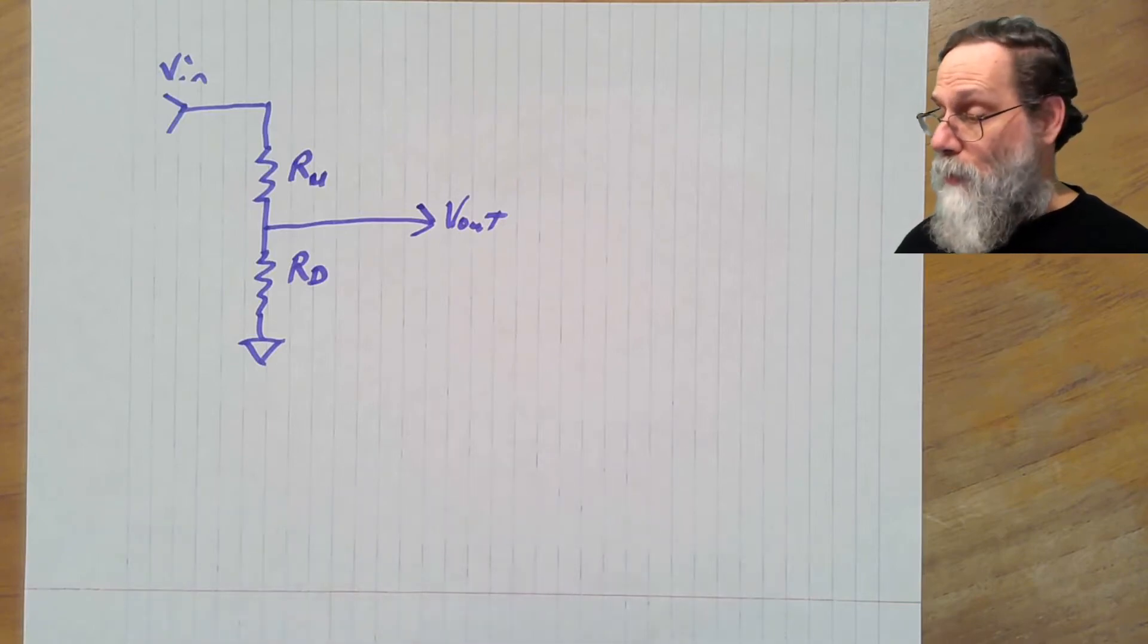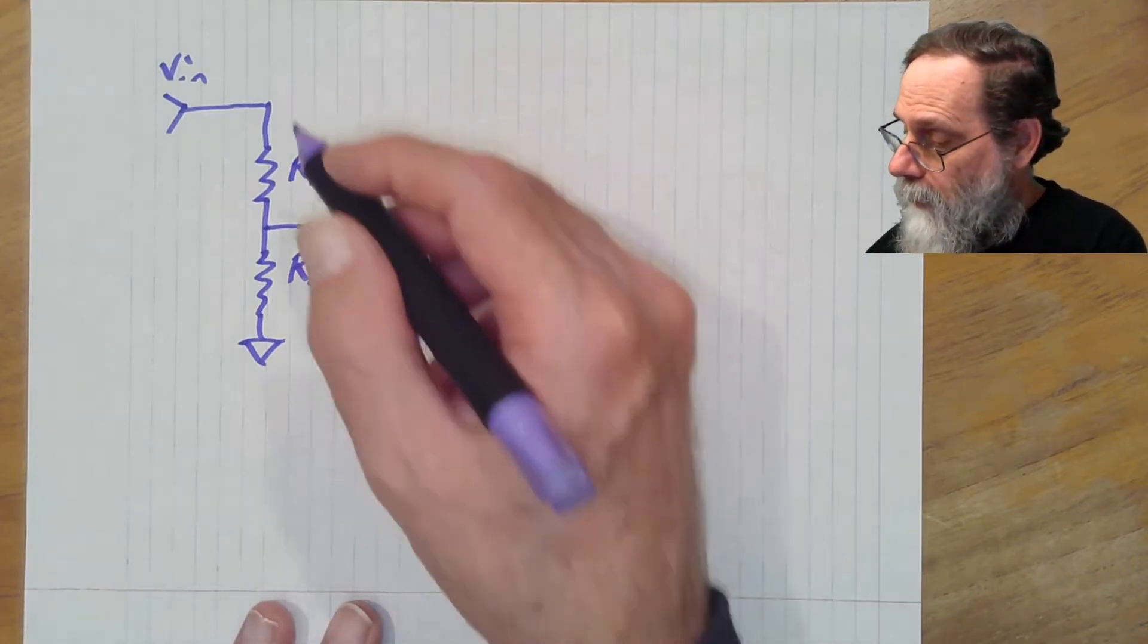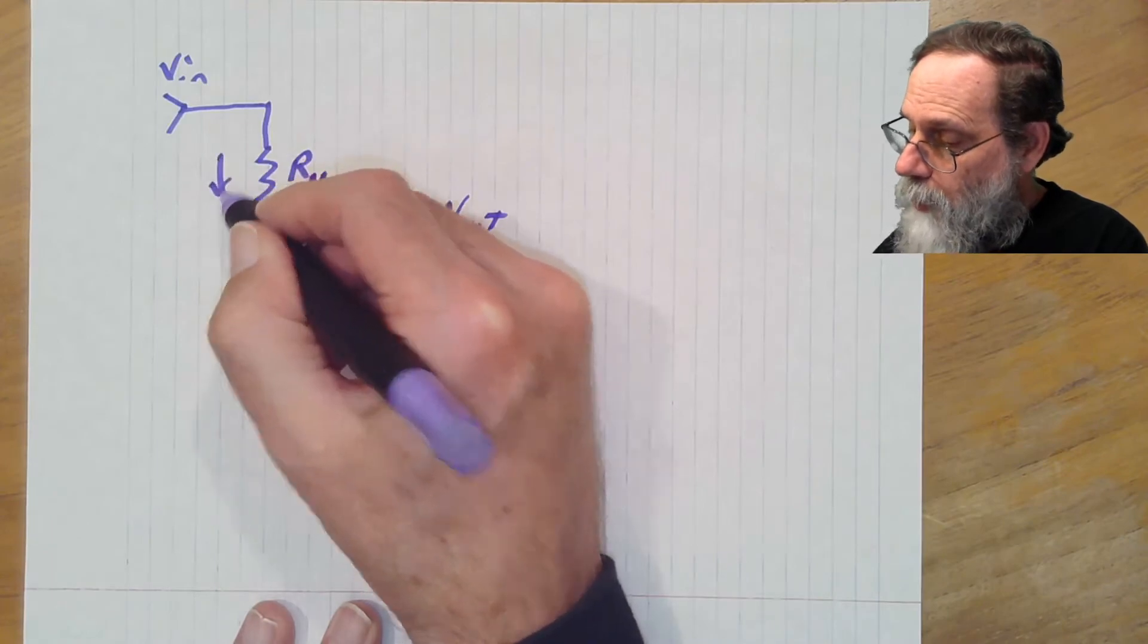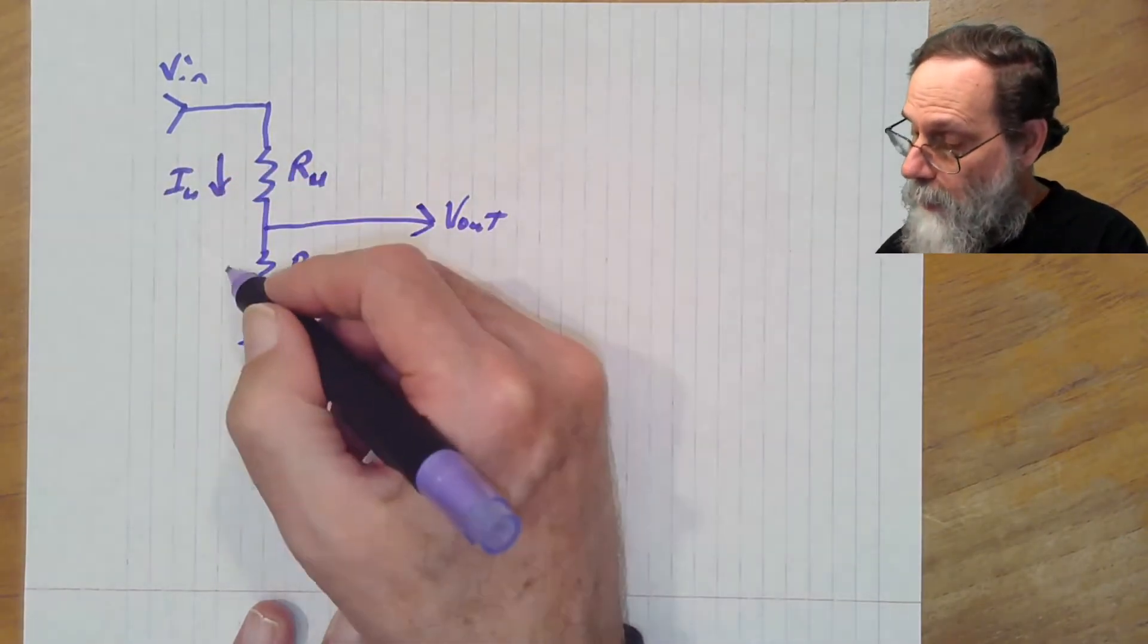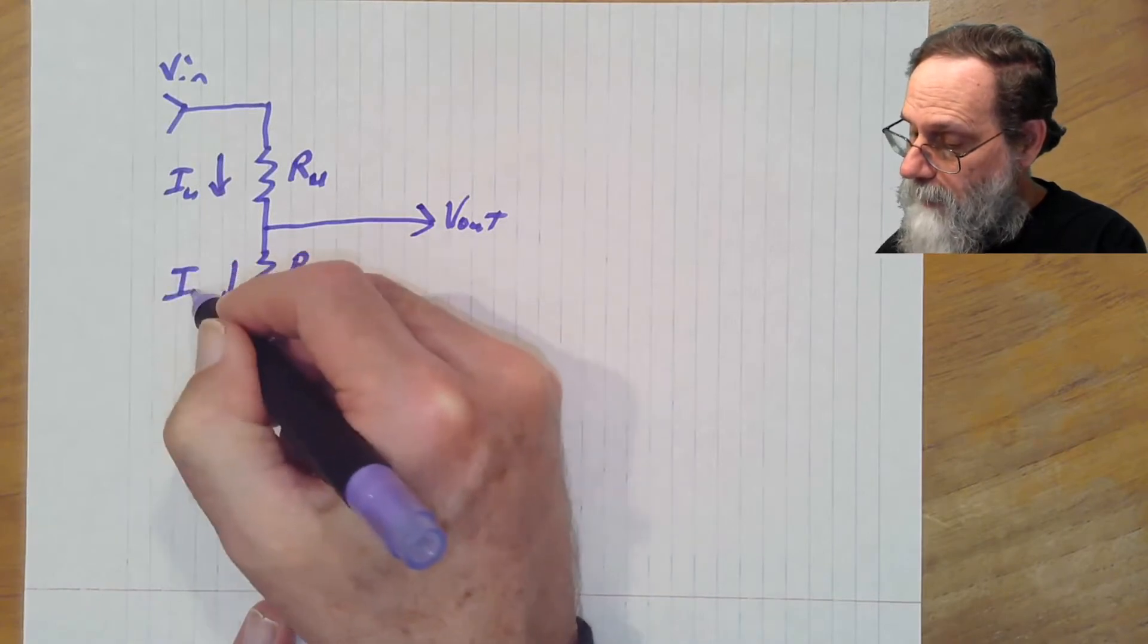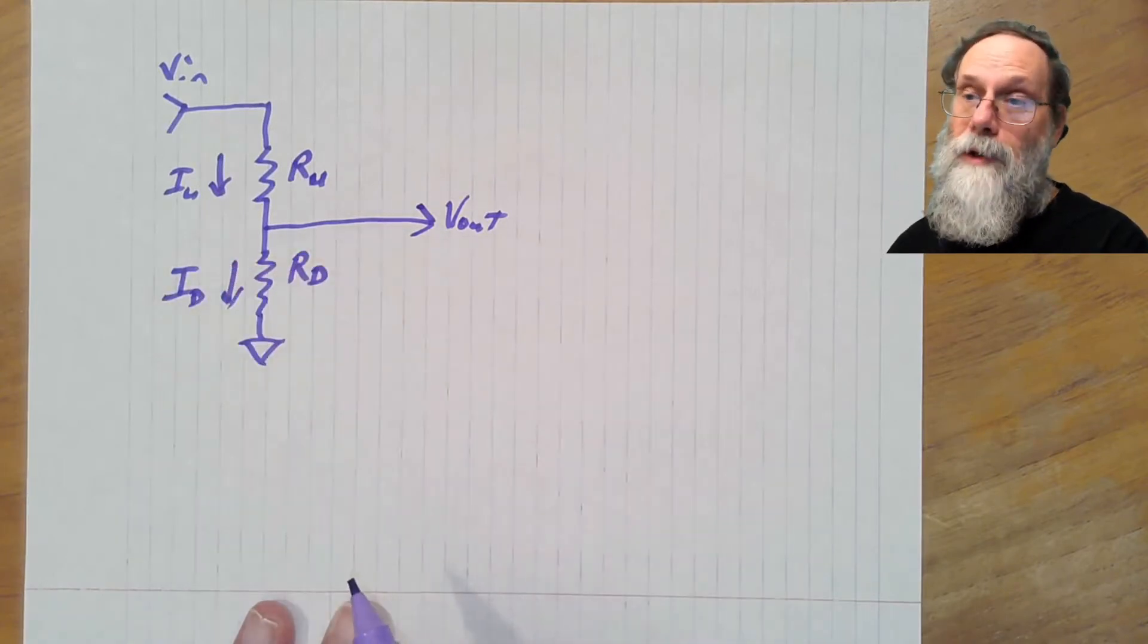What have we got in terms of voltages and currents here? We have a current, let's call it Iu, through that. We have another current, let's call it Id, through that resistor.